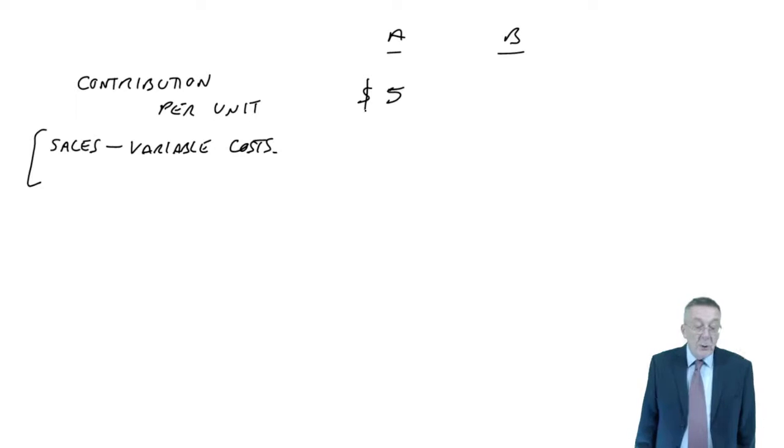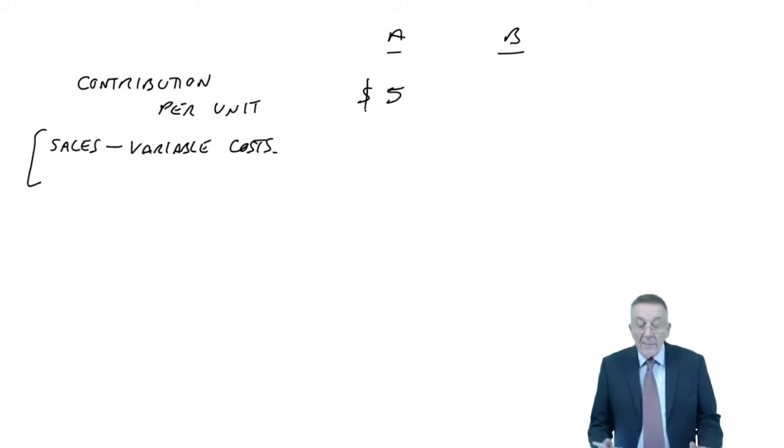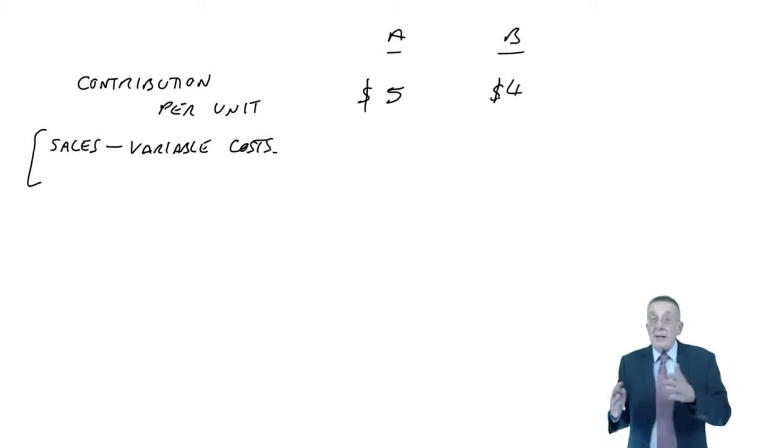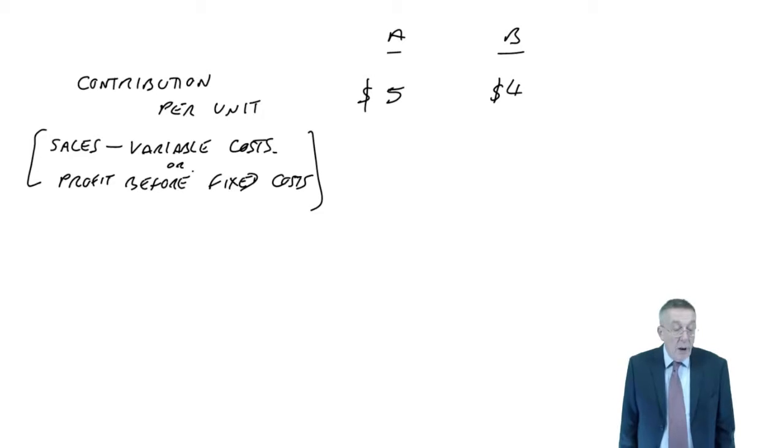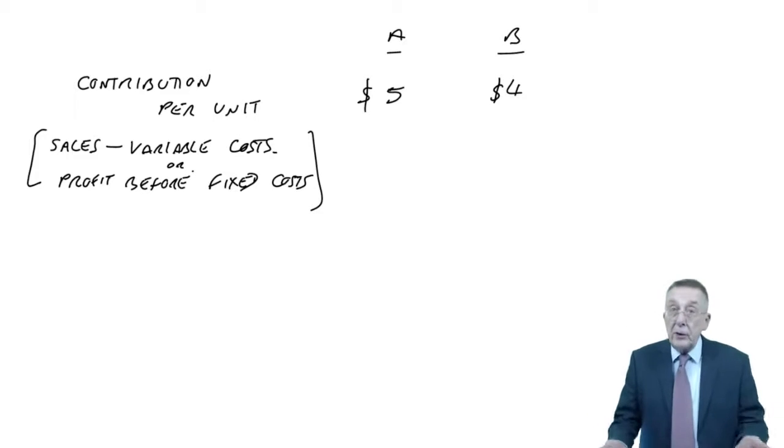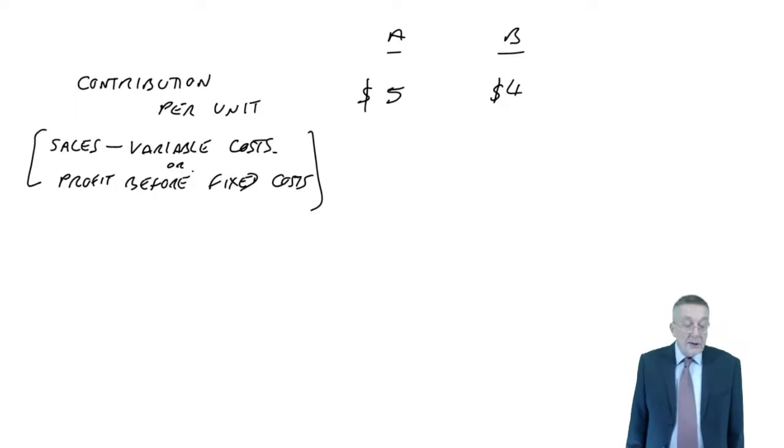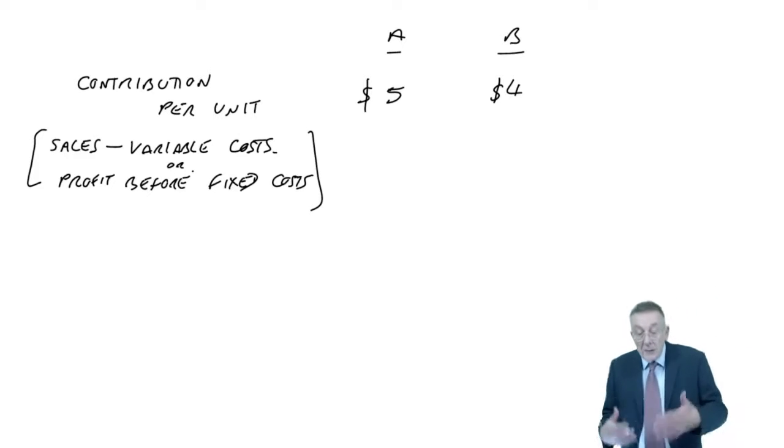Let's check for A. The selling price is $25, the total of the variable costs is $8, $5, $7, that's $20. So $25 minus $20, A generates a contribution of $5 per unit. And similarly B, selling price $28, the variable costs of materials, labour, and other variable is $24, so it's generating $4 per unit. So sales less variable costs, or the alternative, it's the profit before any fixed costs.